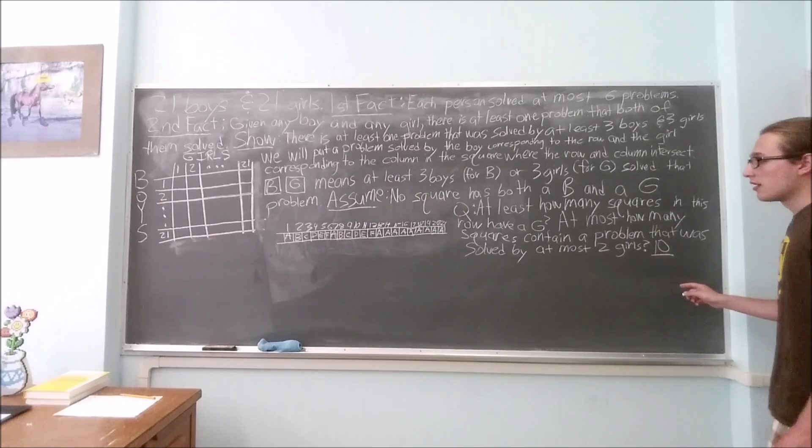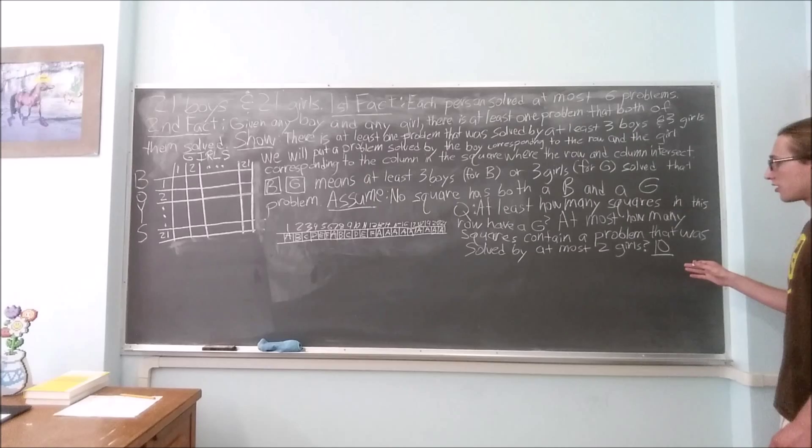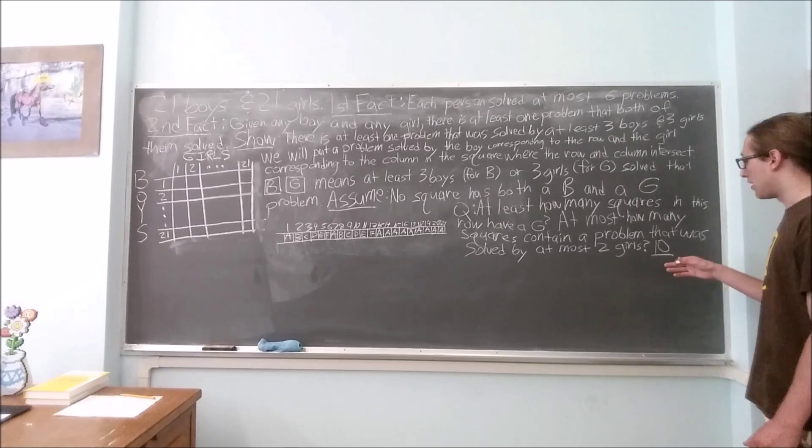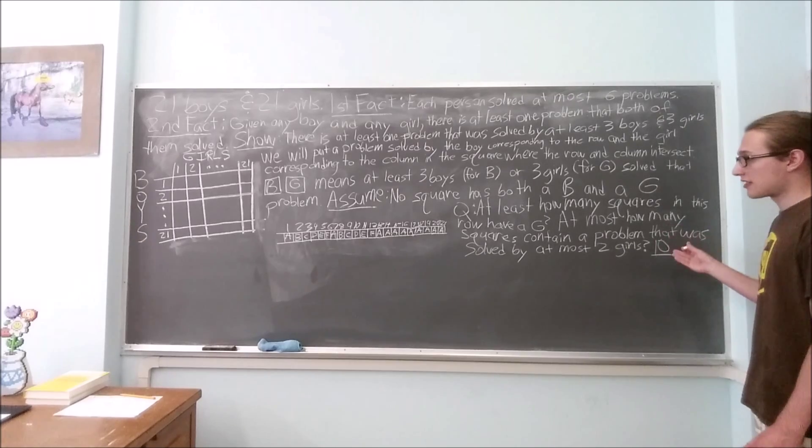And that means that since there were twenty-one squares total, the number of squares that have to have a G in them has to be at least eleven, which is twenty-one minus ten.